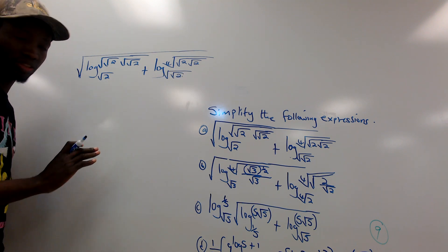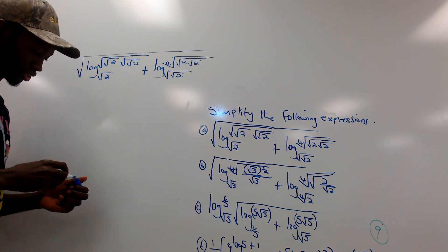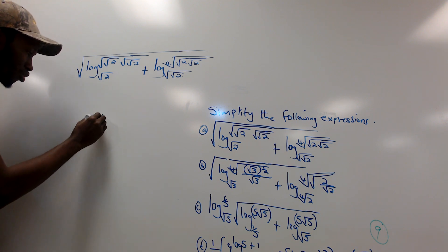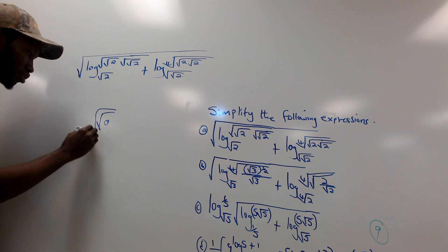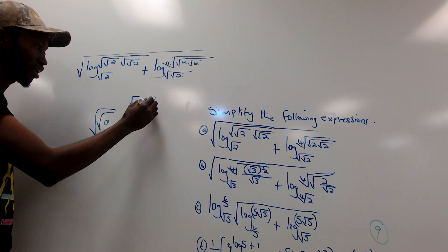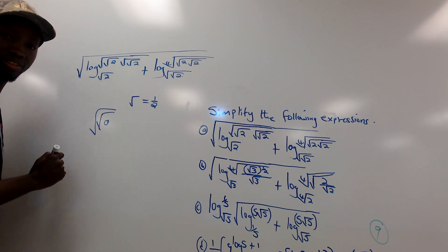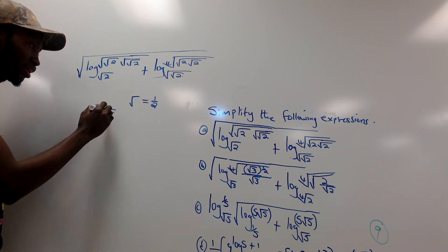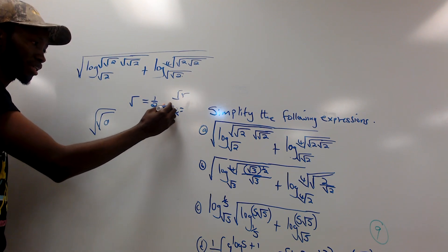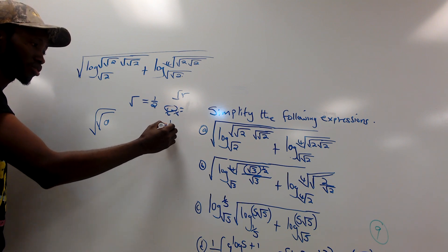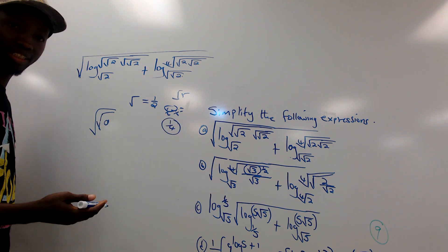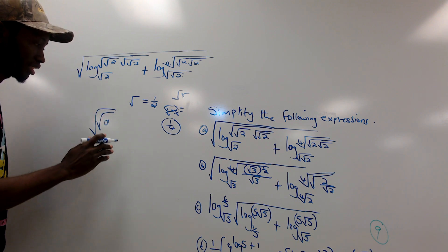We need to use certain basic principles. If we have the square root of a, that square root's significant value as a power is one-half. If you have two square roots, you multiply half times half, giving one-fourth. So when you have two square roots, the index or exponent is 1 upon 4.